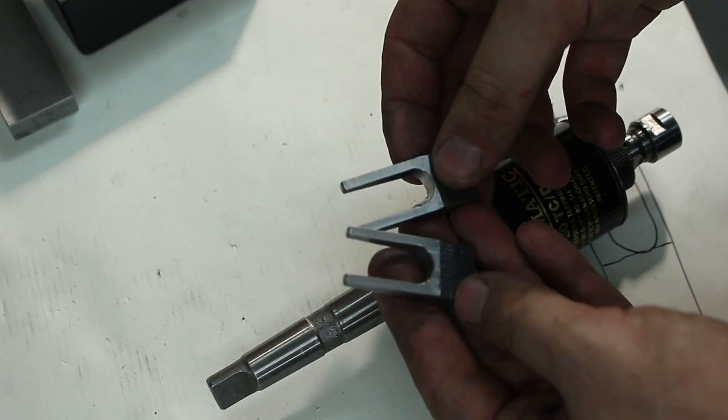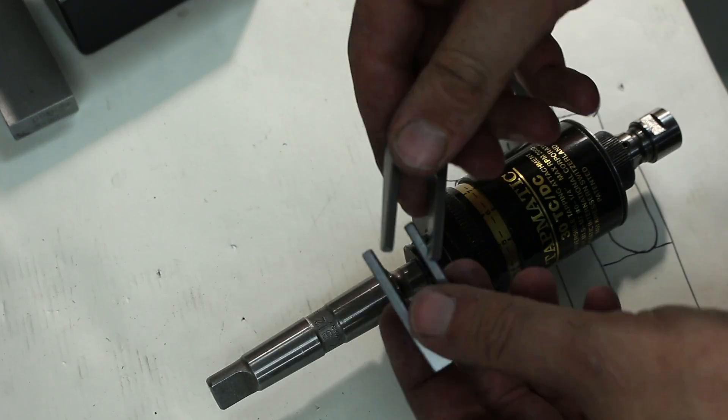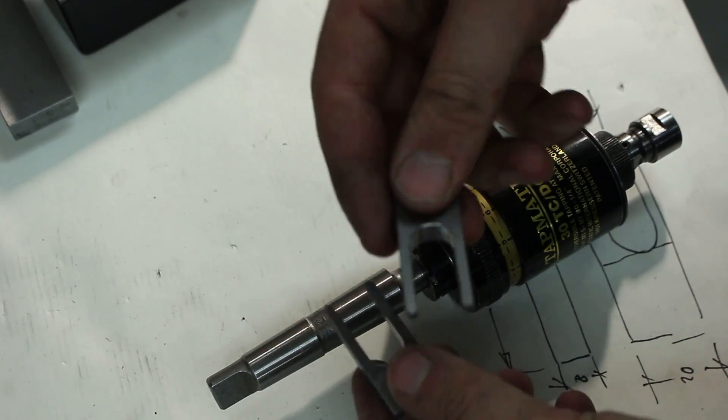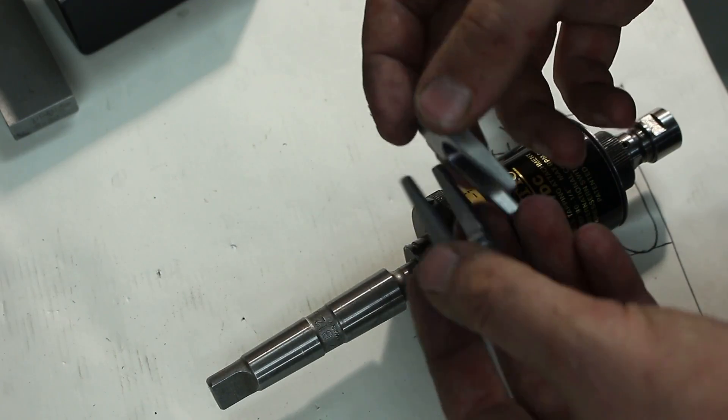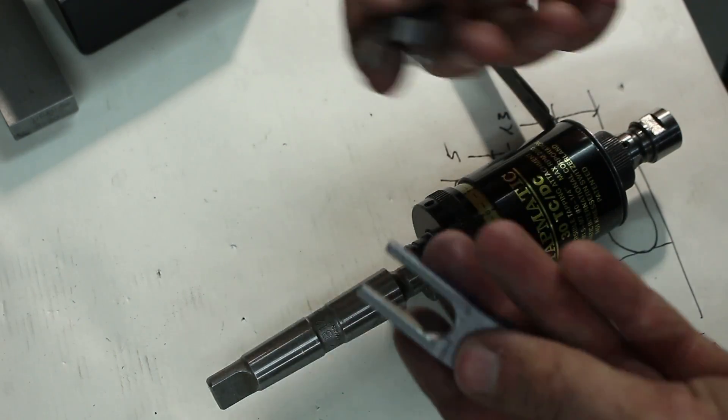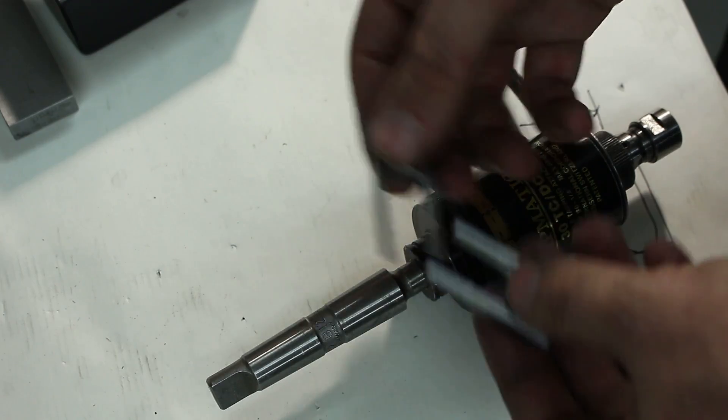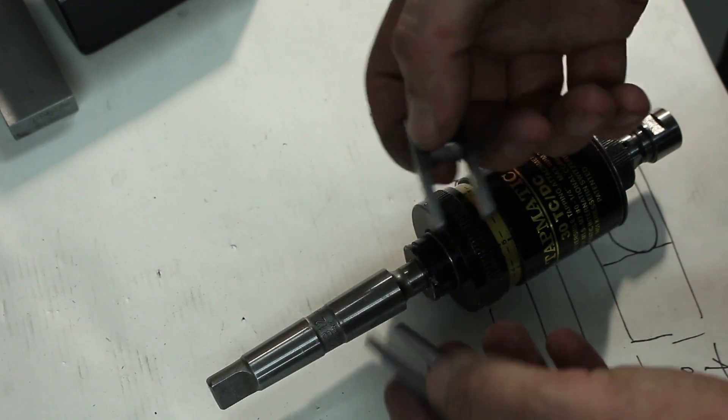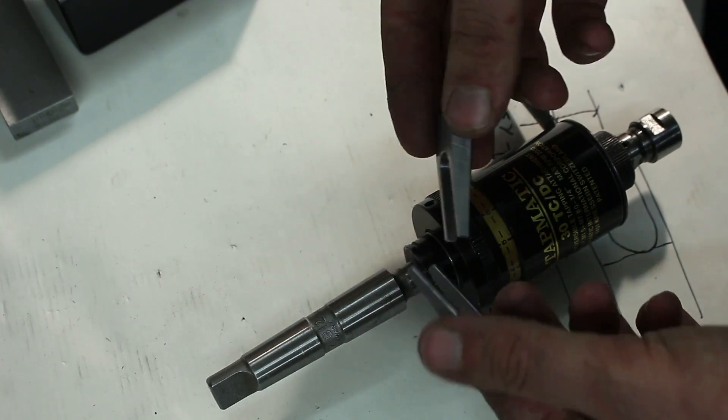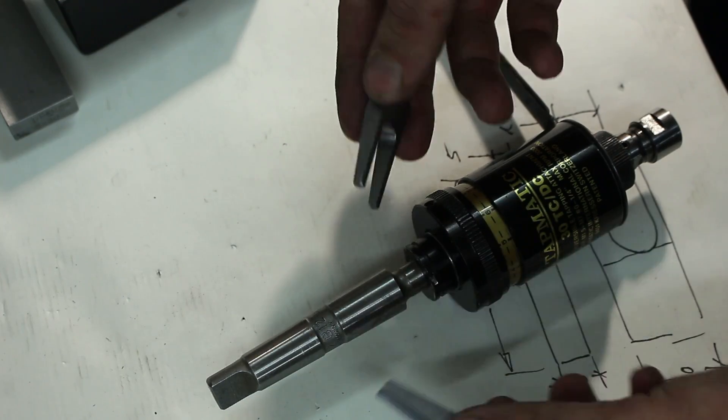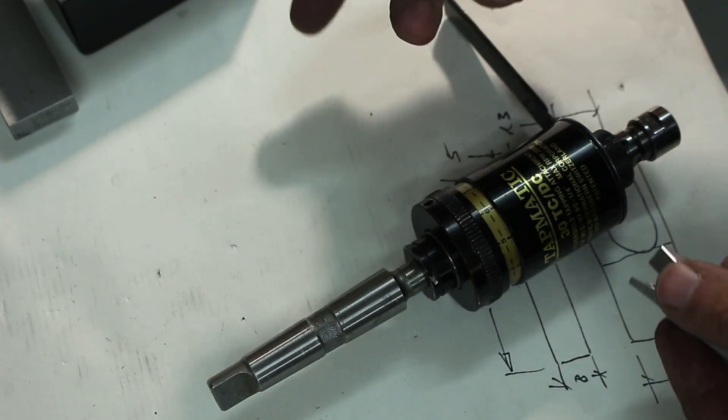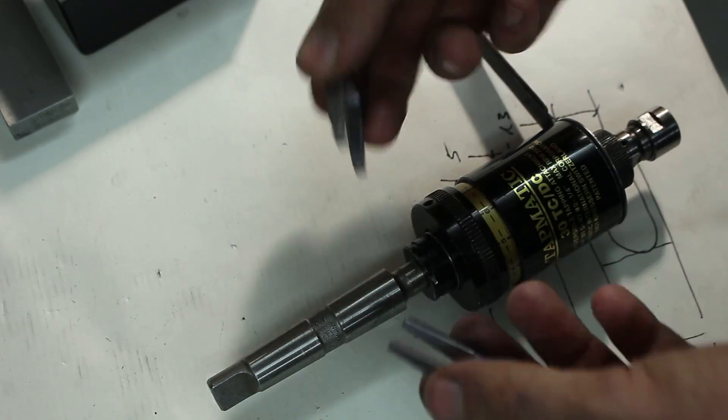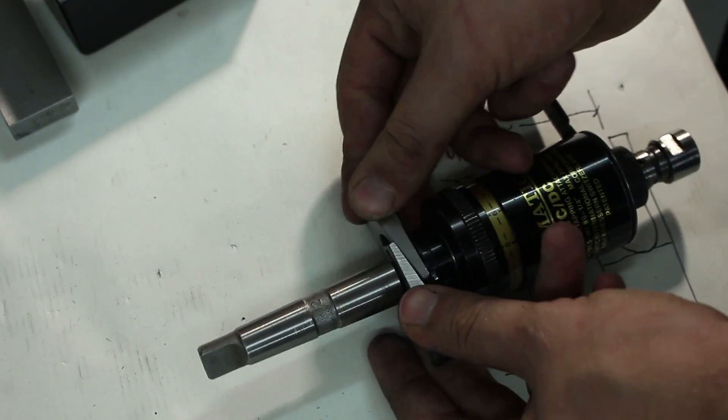I machined the two wedges with the slot in it and I deburred everything so they don't scratch up each other. I'm not going to harden them. If you want to use them on a regular basis, it makes sense to harden them and draw them back to a good working hardness of something like 50 Rockwell C. But in this case, I'm probably only going to remove this taper once, so this will be good enough.